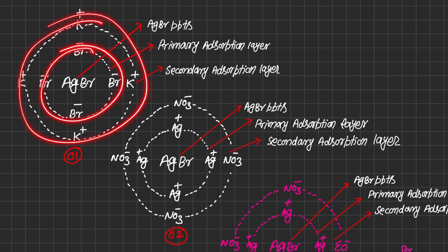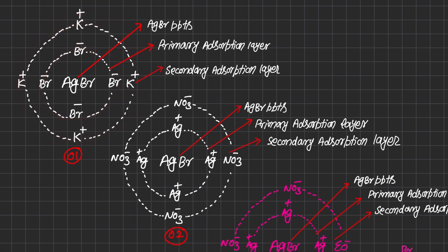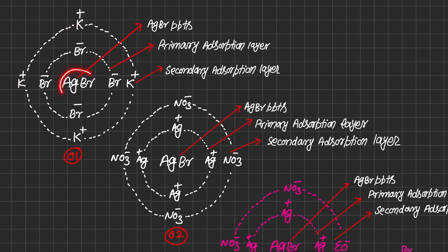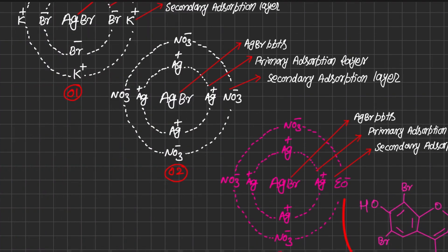Since KBr is still present in excess in the flask, bromide and potassium ions are present in excess around the precipitates. Bromide makes the primary layer due to the common ion effect — silver bromide contains bromide as the common ion — so bromide will make the primary adsorption layer, whereas potassium will make the secondary layer. This was the first stage when a few drops of silver nitrate have been added.